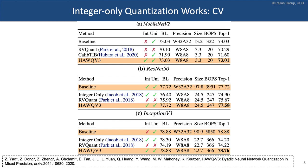We have similar results on ResNet50 and Inceptionv3. This is an interesting result related to batch norm: the integer-only work from Google (Jacob et al.) achieved 74.90% accuracy on ResNet50. If you treat batch normalization the way we described, you can close the gap and get much higher accuracy — 77.58% for ResNet50. For Inception, you can improve integer-only quantization results by more than 4%.